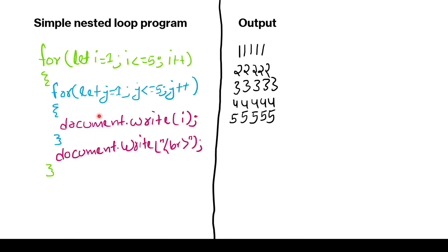After that, we have a simple nested loop example. For example, we have let i equals to 1, then i is less than or equals to 5, then we increment i. First it initializes variable i equals to 1, then it checks the condition, and after that it sees this for loop. You can see it has this inner for loop which initializes variable j equals to 1, then checks condition, and after that it prints this value.